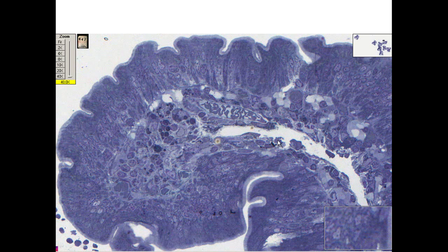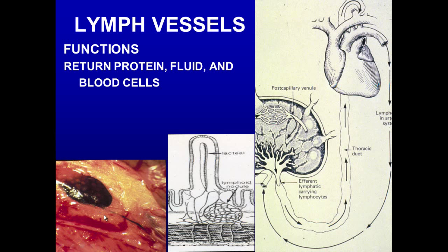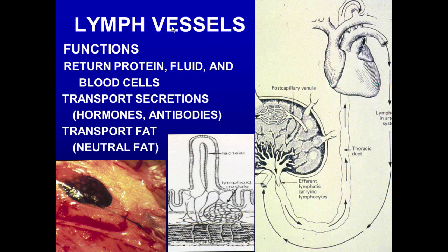Here we see the central lacteal, which is distinct from the capillaries nearby; macrophages are also visible in through there. In the spermatic cord, in addition to arteries and veins, there are also lymphatic vessels carrying fluid back to the bloodstream. Here we see a lymph node and a lymphatic vessel — if you inject something locally it will follow the lymph vessel into the regional lymph node, then to the thoracic duct, and from there back to the right side of the heart.